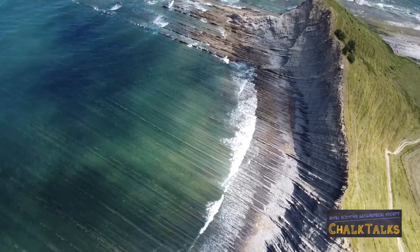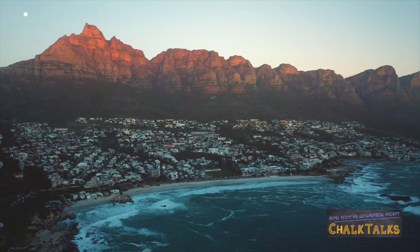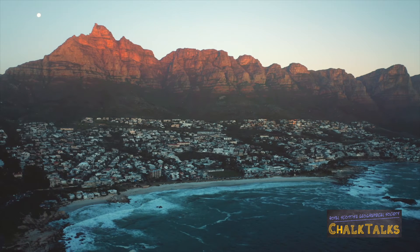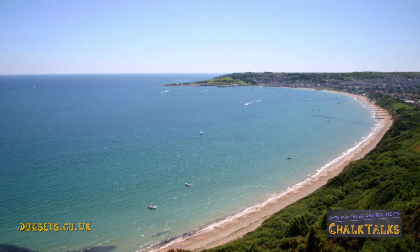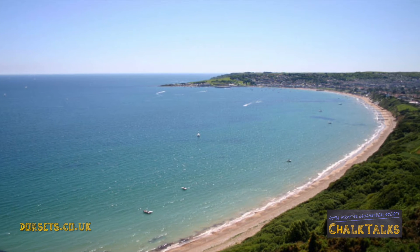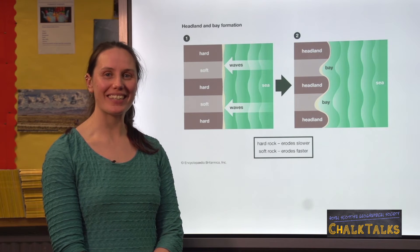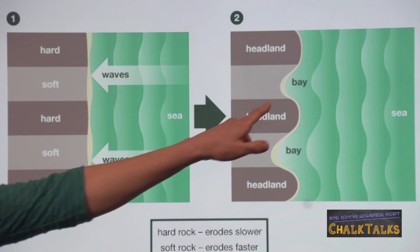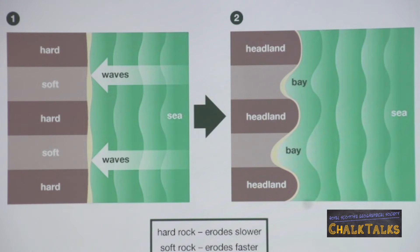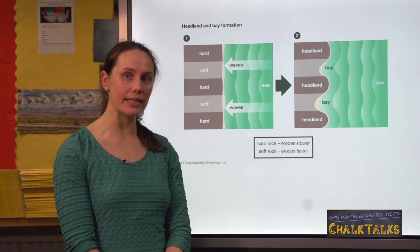A further set of coastal features you need to explain are headlands and bays. Your explanation should focus on differential erosion — softer rock will be eroded more quickly leading to a bay, while harder rock will stick out into the sea as a headland. At Swanage Bay, the bay is made of clays and sandstone which are softer than the limestone headland to the south and chalk headland to the north. However, wave refraction concentrates wave energy on the headlands — waves change direction as they change speed, so as water gets shallower around the headlands it bends towards them, causing more erosion and cliffs. In the bays, deeper water means deposition and beach formation.